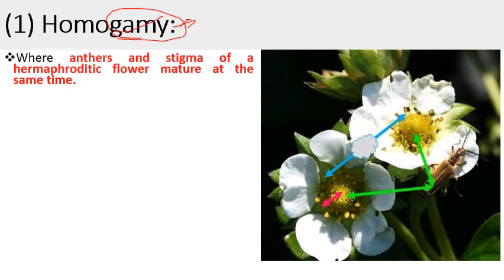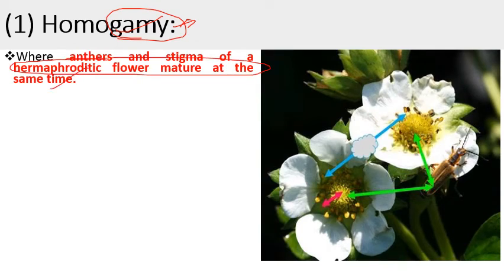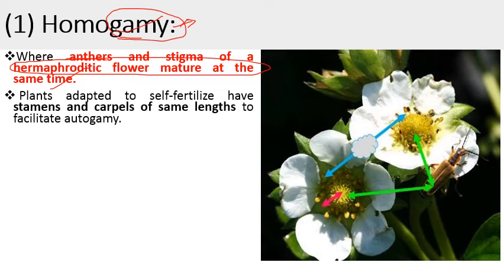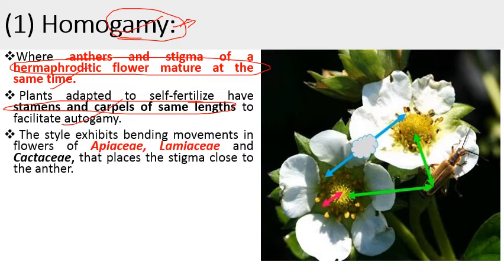The first is homogamy. 'Homo' means same, 'gamy' means marriage. Here, the maturity level of the anther and stigma is the same — the anther and stigma of a hermaphroditic flower mature at the same time. Plants adapted to self-fertilize have stamens and carpels of the same length. The style exhibits bending movements in flowers of Apiaceae, Lamiaceae, and Cactaceae that place the stigma close to the anther to ensure self-pollination.